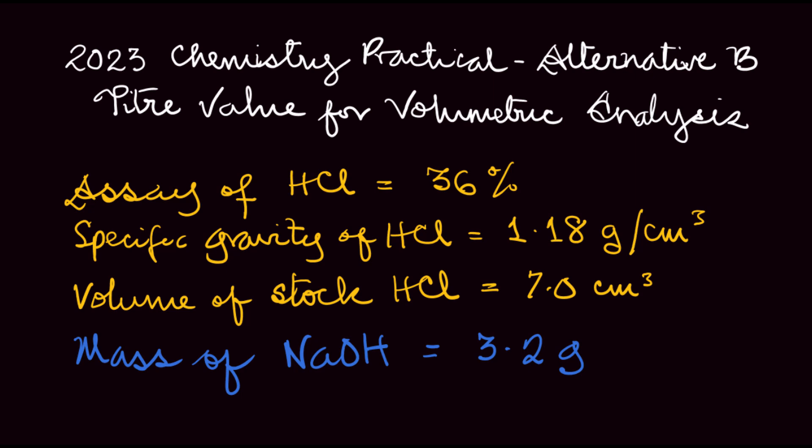The assay of the HCl is essentially its purity, meaning that for every 100 cm³ of the stock acid solution, 36 cm³ is pure HCl. The volume of stock HCl to be diluted is 7.0 cm³. The base is sodium hydroxide with a mass of 3.2 grams. We use the mass and molar mass of the base to find moles, then divide by 1 dm³ to get the concentration in mol/dm³.